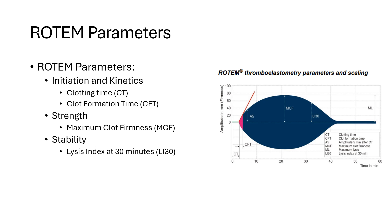ROTEM parameters one must be familiar with in order to interpret and act on an abnormal ROTEM. First is CT, or clotting time — this is the time from the start of the test until clotting begins. This initiation phase is dependent on clotting factors and factor inhibitors. Next is CFT, or clot formation time — this is the time from initiation of clotting until clot firmness reaches 20 millimeters, dependent on fibrin amplification and crosslinking as the thrombus propagates. MCF, or maximum clot firmness, is the overall strength and stability of the clot, dependent on platelets (around 80%) and fibrinogen (around 20%). The lysis index (LI) is a reduction in clot firmness within 30 minutes or one hour after MCF is achieved, relative to the original MCF value, dependent on the presence and/or severity of fibrinolysis.